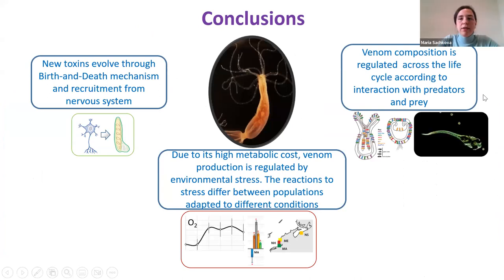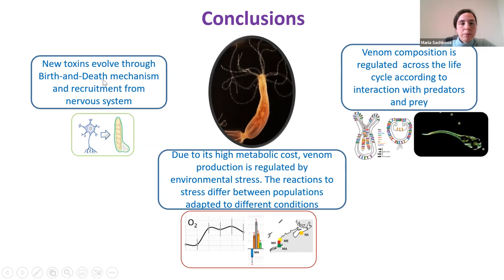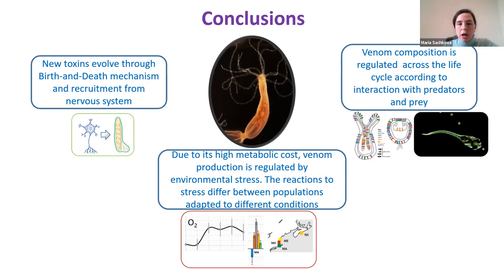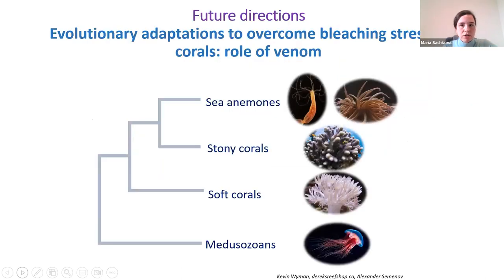To conclude: during my postdoc, we showed that toxins evolved through birth and death mechanisms and also through recruitment from the nervous system to the venom system in the sea anemone Nematostella. We also showed that venom composition is regulated across the life cycle according to interactions with predators and prey. Because venom has high metabolic cost, environmental stress regulates venom production, and reactions to stress differ between populations adapted to different environmental conditions.